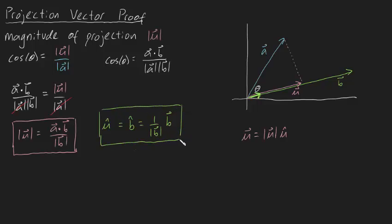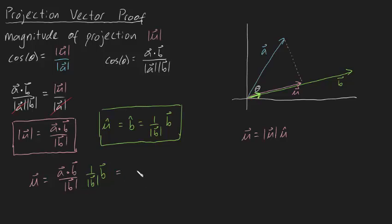Now if we plug in both of these pieces of information, we've got our formula for the projection. The projection vector U is going to be equal to A dot B divided by the magnitude of B, times 1 over the magnitude of B, times the vector B itself. Grouping these together, we can write this as A dot B divided by the magnitude of B squared, times the vector B. This right here is the projection of A onto B.